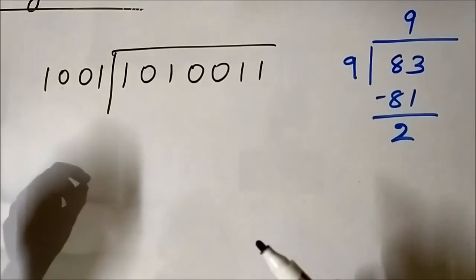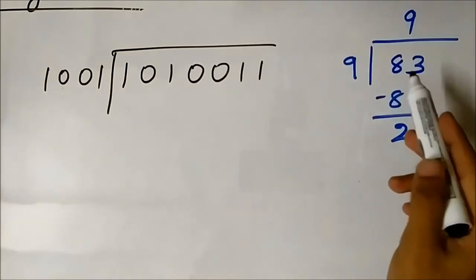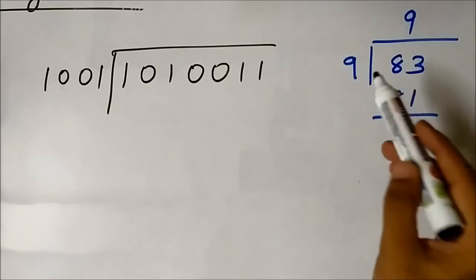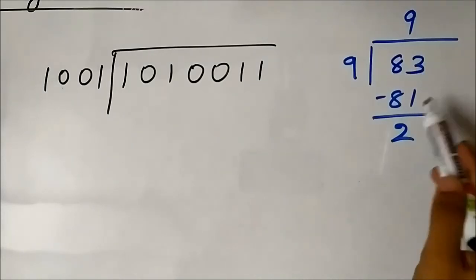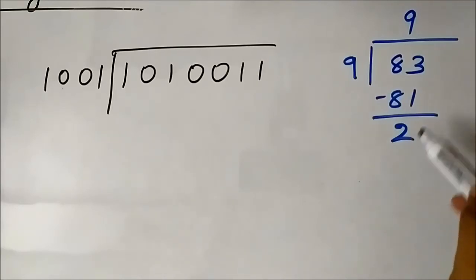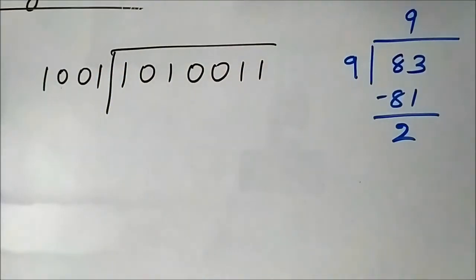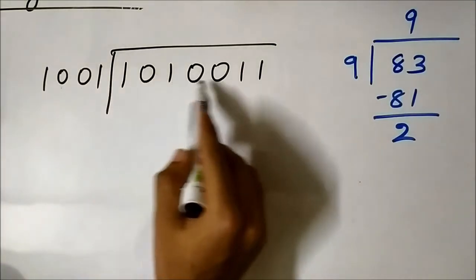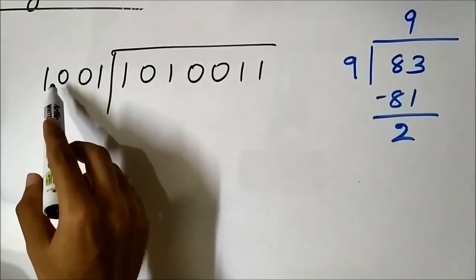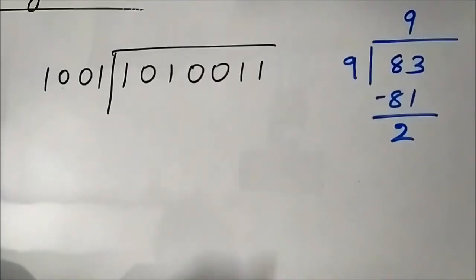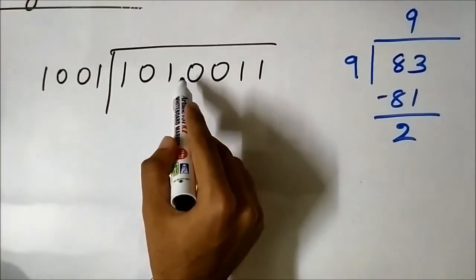Let us take one more example: 83 divided by 9. In decimal, 9 times 9 is 81 — the closest multiple to 83 — and 83 minus 81 gives remainder 2, so the quotient is 9 and the remainder is 2. In binary, 83 is 1 0 1 0 0 1 1 and 9 is 1 0 0 1. We compare the first 4 bits of the dividend with the divisor; since 1 0 1 0 is greater than 1 0 0 1, we can perform the division.